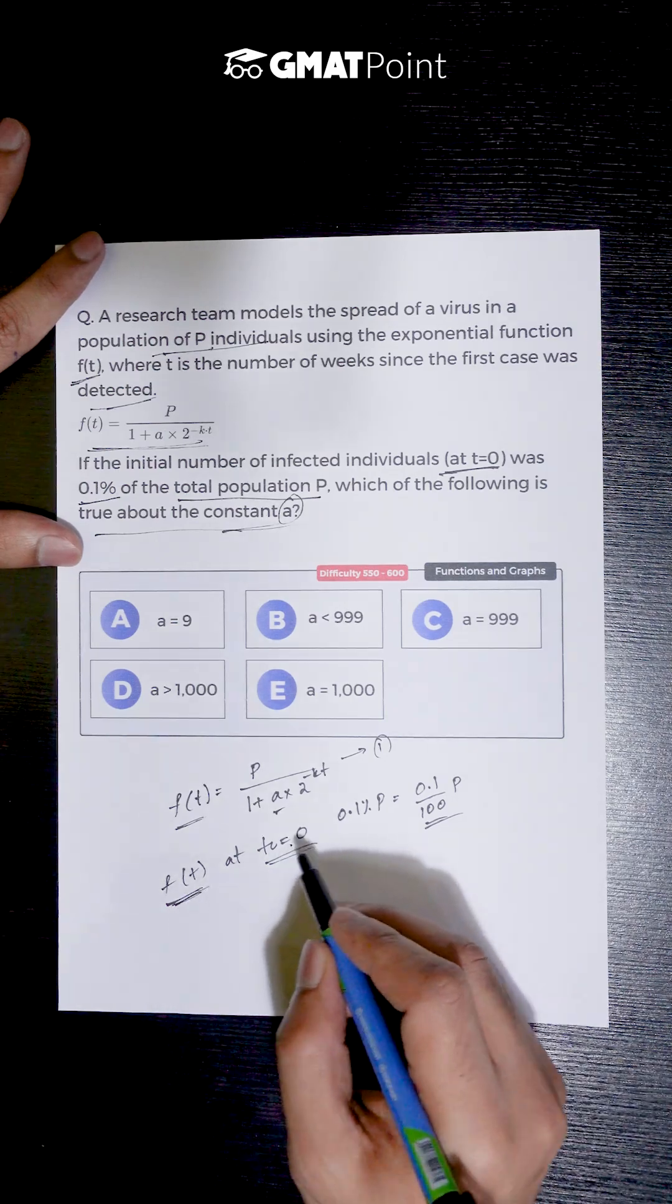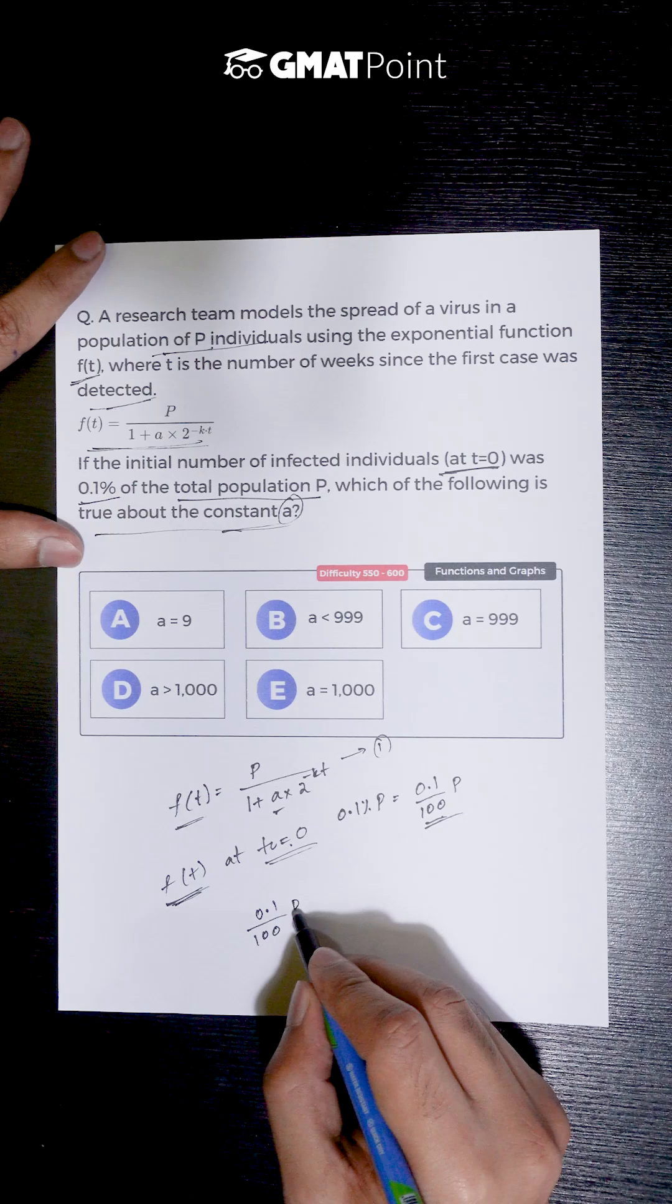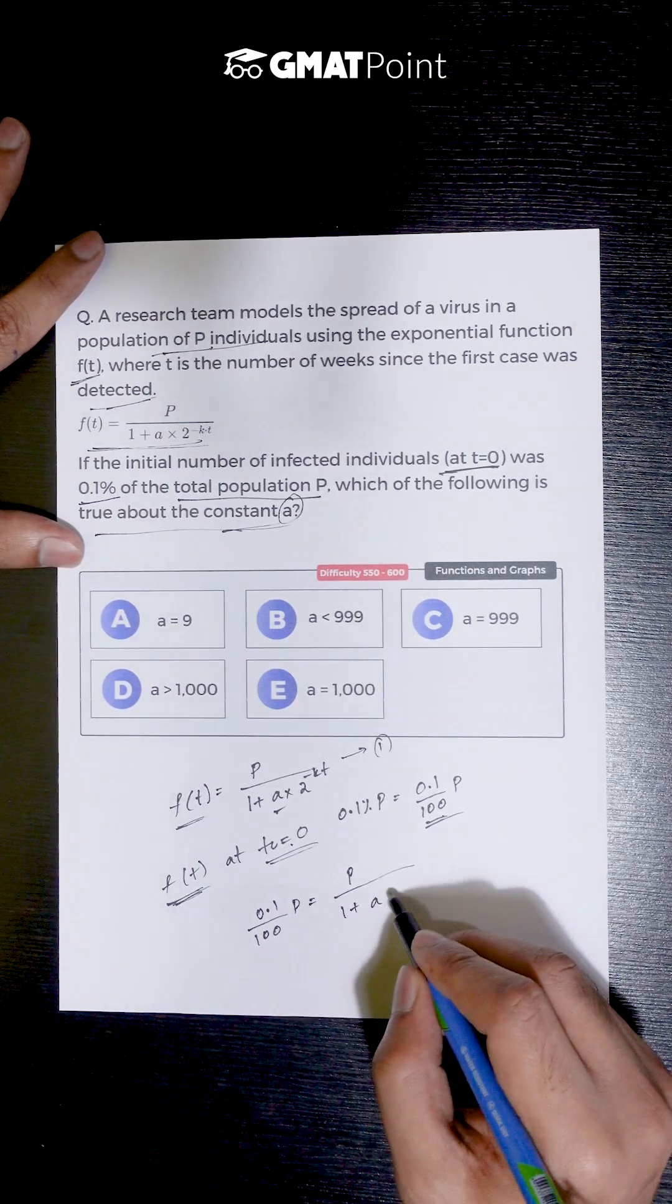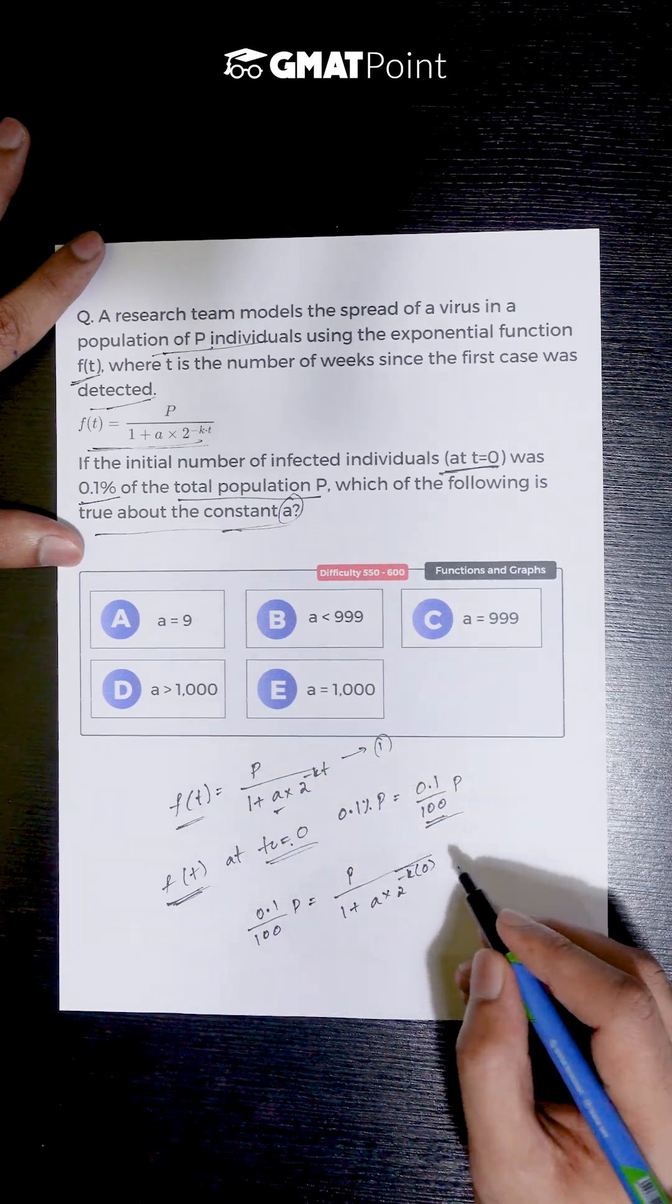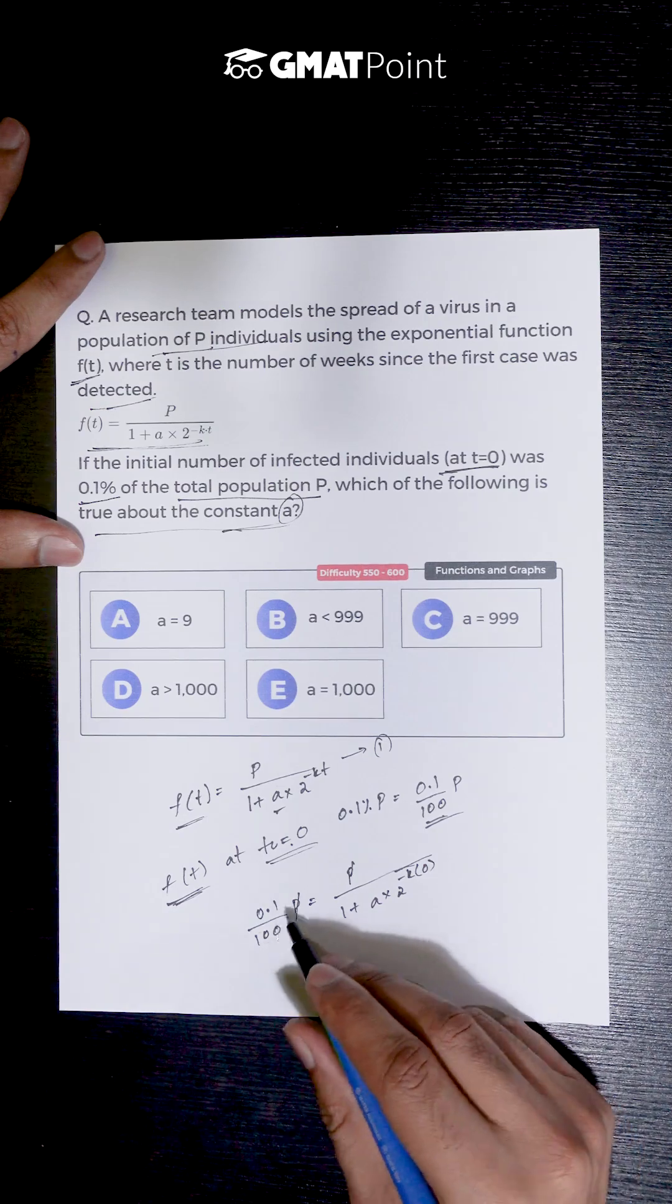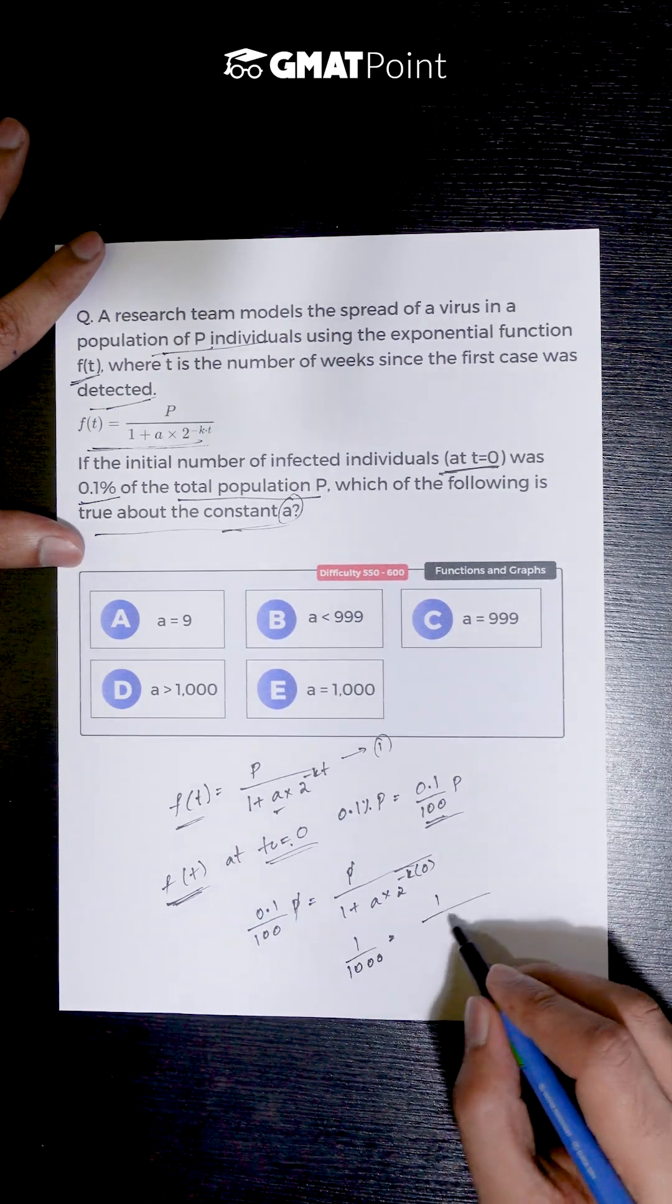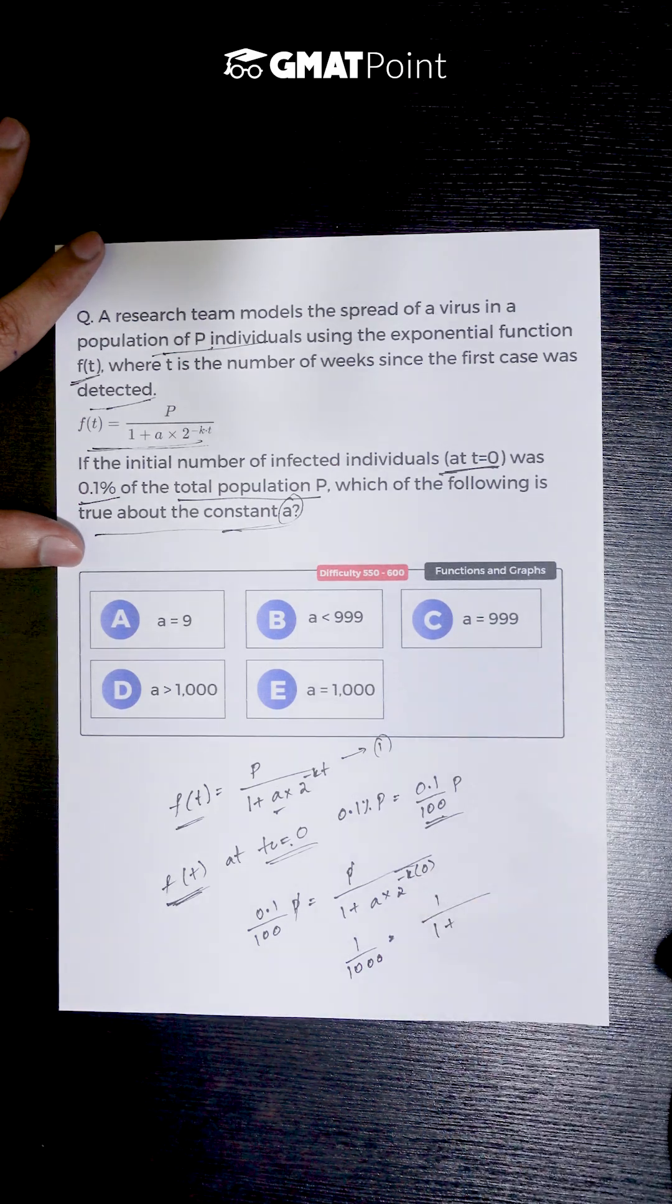So, the value of f(t) at t=0 is 0.1 divided by 100 times P, which equals P divided by 1 plus a times 2 to the power of minus k times 0. Cancelling P on both sides, we have 0.1 divided by 100, which is 1 divided by 1000, equals 1 divided by 1 plus a—since anything to the power of 0 is 1, we have 2 to the power of minus 0 is also 1, and we're left with a times 1, which is a.